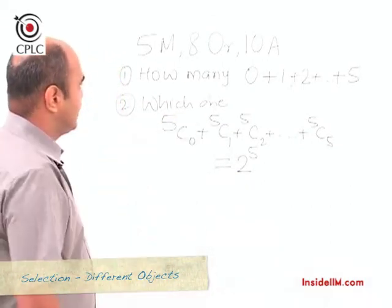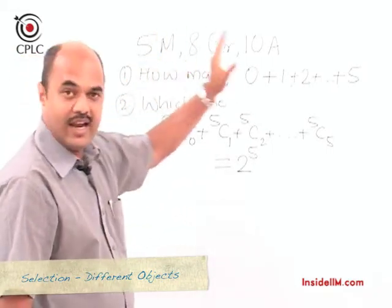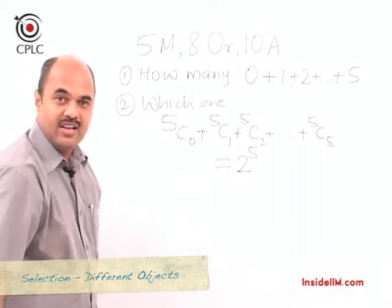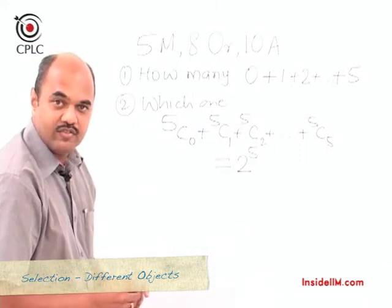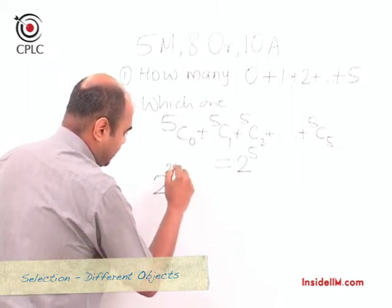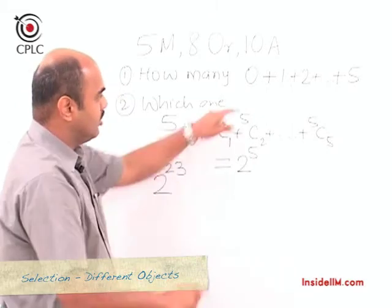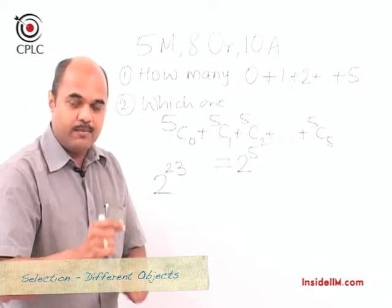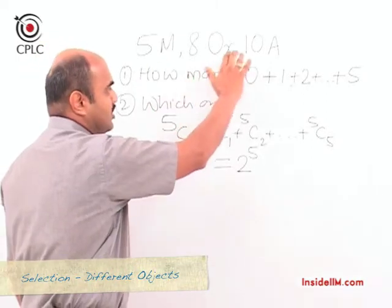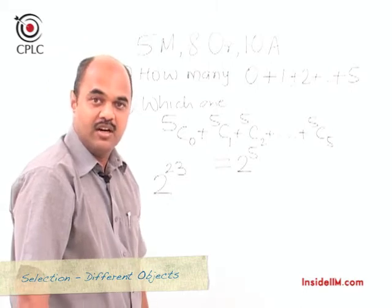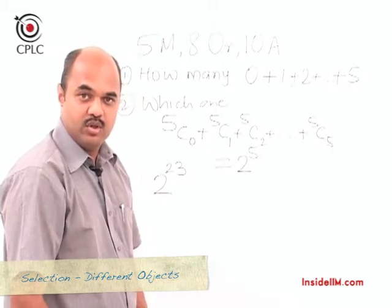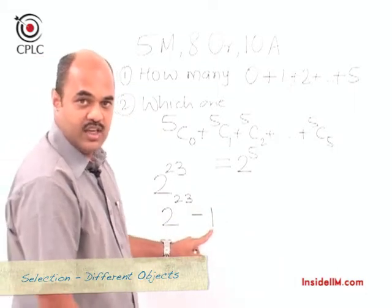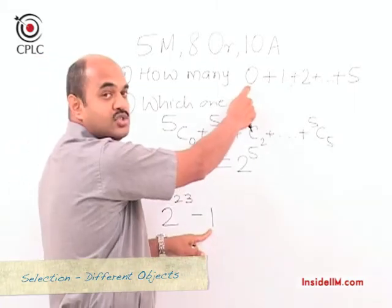Here with 5 mangoes, the answer is 32 ways. Now if we take the entire question — 5 mangoes, 8 oranges and 10 apples, in how many ways can a fruit be selected? — there are 23 fruits in all, so the answer is 2^23. This includes no fruit being selected as one possibility. If the question is modified to require at least one fruit selected, the answer would be 2^23 minus 1.